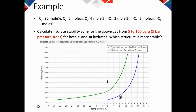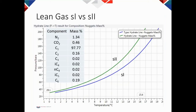Here is another mixture — the Nugget field in the North Sea — with 97–98 percent methane and small amounts of other compounds. You can see that Structure II is to the left of Structure I, so the determining phase boundary is Structure I. This represents the approximately 5 percent of systems worldwide that are Structure I; the other 95 percent are Structure II.